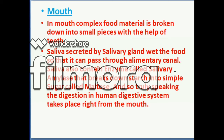In the mouth, complex food material is broken down into small pieces with the help of teeth. The teeth help food materials break into small pieces, starting the first stage of digestion. Saliva secreted by the salivary glands wets the food so it can pass through the alimentary canal. Saliva also contains an enzyme called salivary amylase, which breaks down starch into simple sugar called maltose.